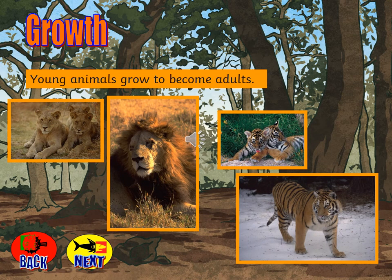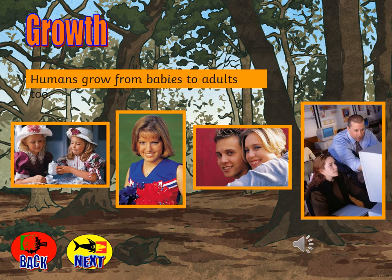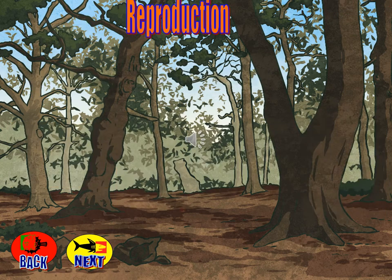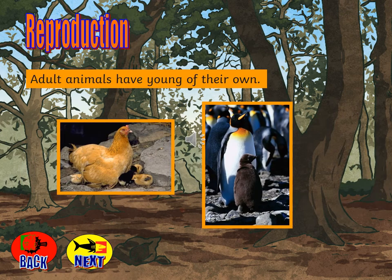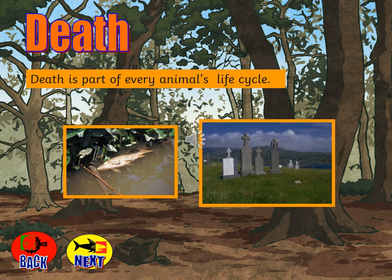Young animals grow to become adults, and babies grow to become human adults. Once an animal becomes an adult, it can then have young or offspring of its own. And we know that death is a part of every life cycle.